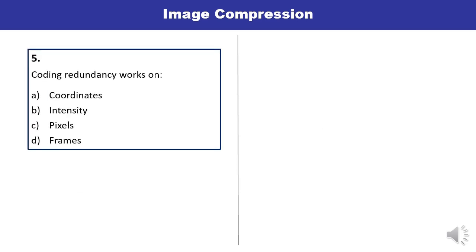Question 5: Coding redundancy works on what? You must have studied the various kinds of redundancy — there are 4 types. Coding redundancy works on intensity. B is the correct answer.